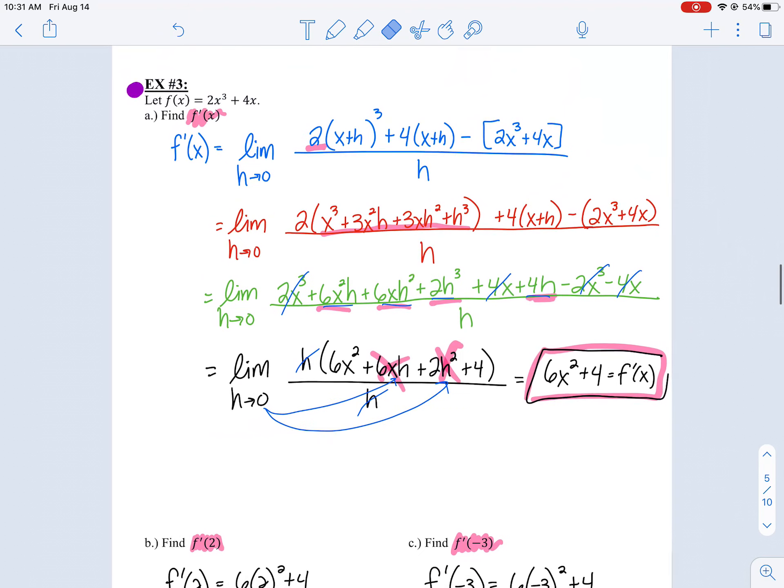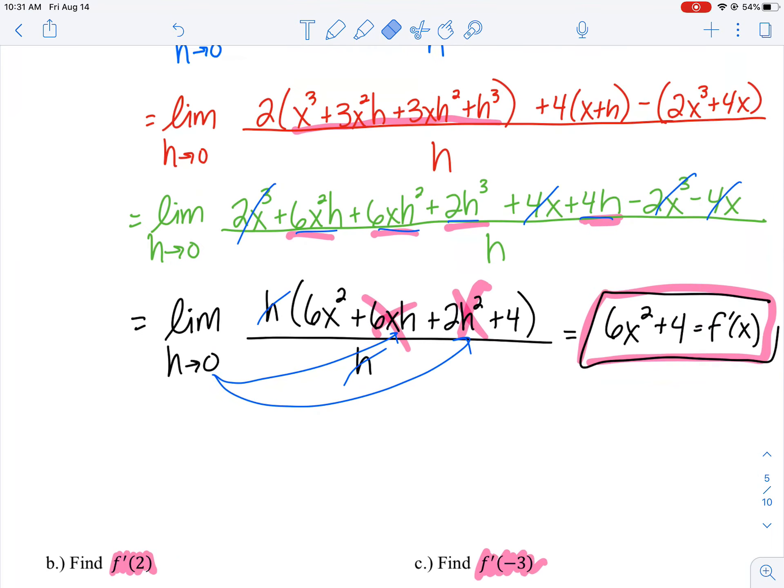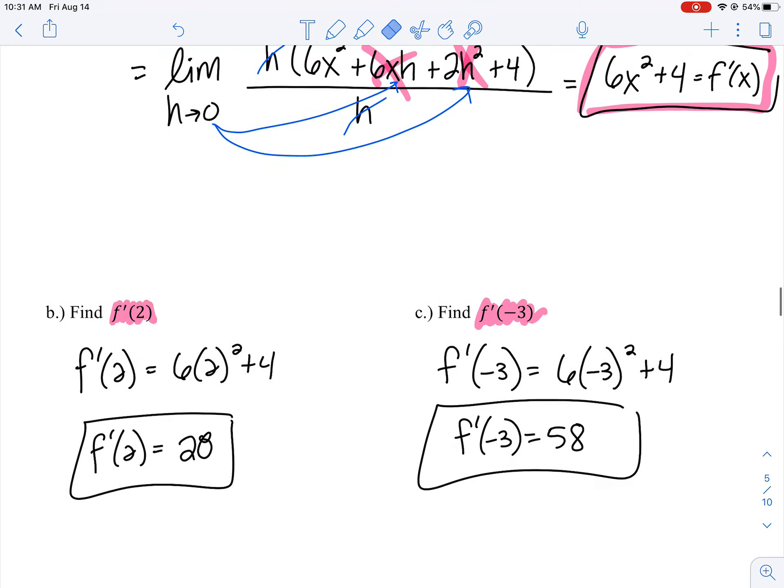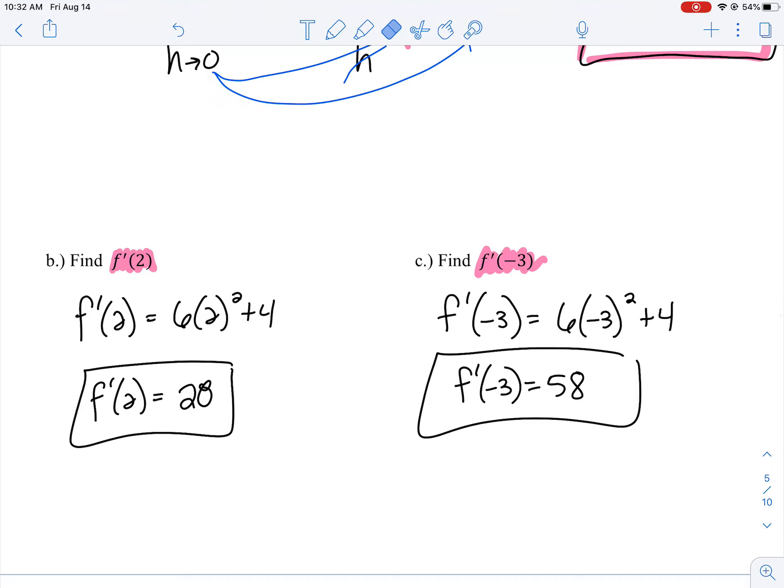But for now, in chapter 11, I do want you to do all of this work. I want you to understand that taking a derivative is really just taking those two points and applying the limit to make them go close together. Use this technique for now. Later in chapter 12, I'll show the secret rule to find derivatives more efficiently than doing all this algebra. But for now, practice, practice, practice.